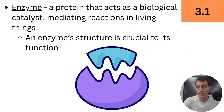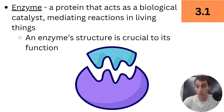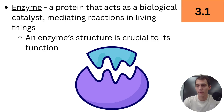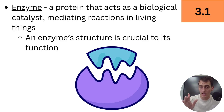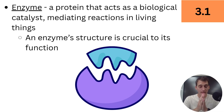Enzymes are proteins. We mentioned in unit one that proteins have a ridiculously complex array of functions and structures. A large group of those proteins are enzymes — proteins that act as biological catalysts. If you've taken chemistry before, a catalyst is any substance that speeds up a reaction, makes it happen faster. Living things use enzymes to make sure reactions happen when and where needed in order to continue living.